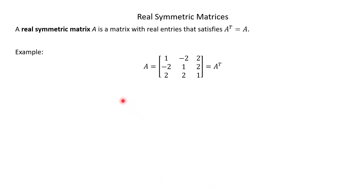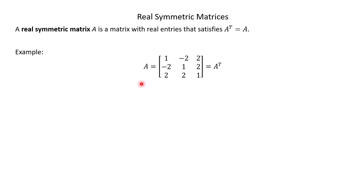The last thing to mention is real symmetric matrices. A real symmetric matrix is one where A transpose equals A. Here's a quick example: the matrix A is exactly the same if you take its transpose, since the transpose just swaps rows and columns. That's it for this one. Thanks for watching.